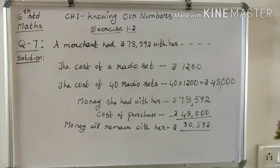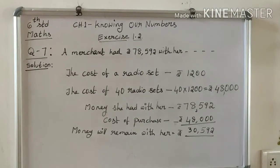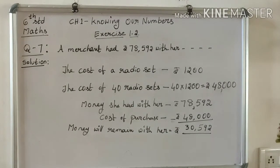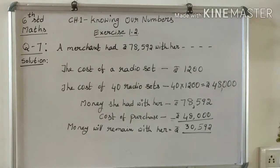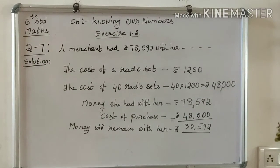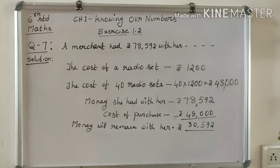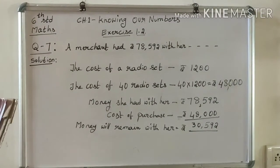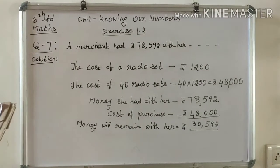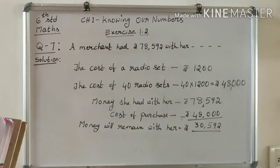Next, Question number 7. A merchant had Rs. 78,592 with her. She placed an order for purchasing 40 radio sets at Rs. 1,200 each. How much money will remain with her after the purchase? The merchant's total amount is Rs. 78,592.